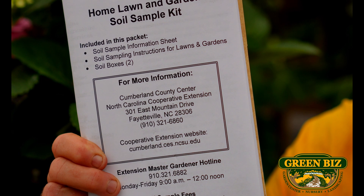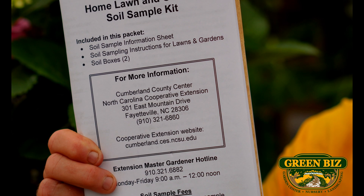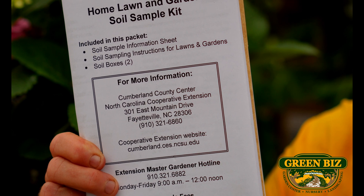Sometimes a fertilizer contains only one or two nutrients, so instead of 10-10-10 you might have 10-0-10 or something like that. If you wonder what kind of fertilizer your lawn needs, the best way to determine that is to do a soil test. Get a sample kit and send it in, and the county extension agency will tell you what nutrients you need to make your lawn the most beautiful on the street.